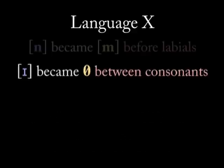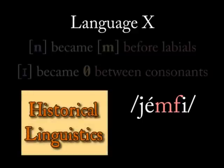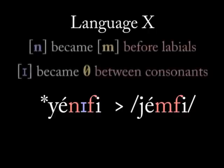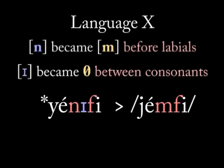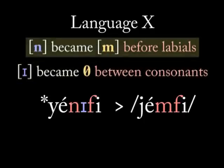Now, language X has the word YEMFI. Comparing data from closely related languages, just as we did in the introduction to historical linguistics, we've been able to reconstruct the proto-form of that word as YENIFI. Which sound change happened first — deleting I, or changing N to M?